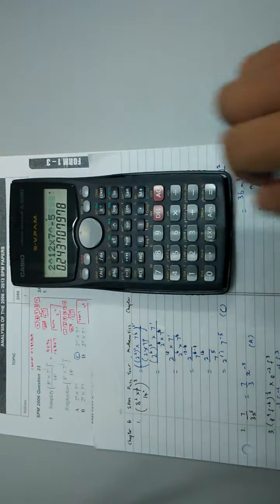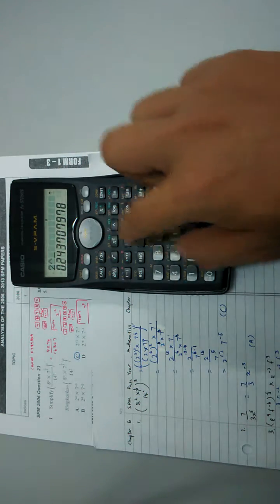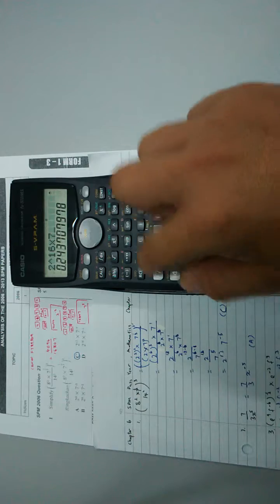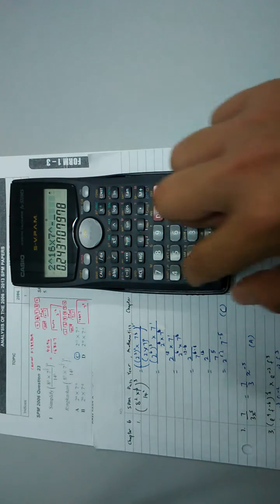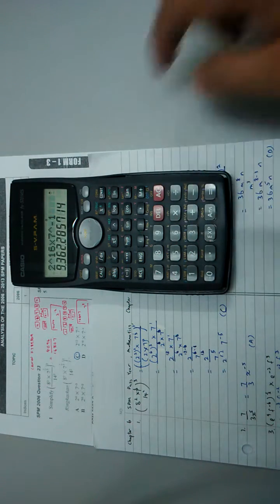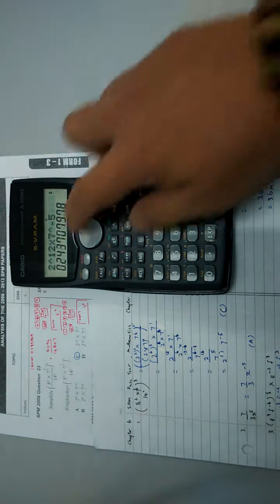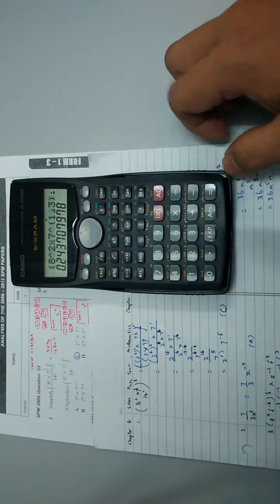And here this is the answer: 2 to the power of 16 multiplied with 7 to the power of negative 1. So I know that this is the answer which is the same as this.